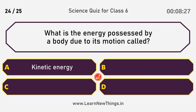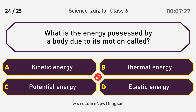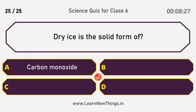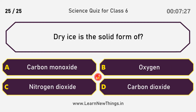What is the energy possessed by a body due to its motion called? Answer: Kinetic energy. Dry ice is the solid form of carbon dioxide.